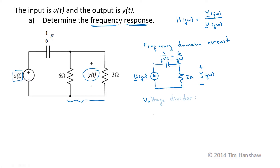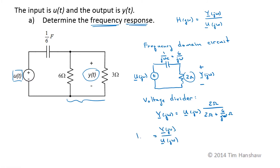This is now just a voltage divider. The output voltage Y of J omega is equal to the total voltage across the series combination, U of J omega, times the 2-ohm impedance over the sum of the two series impedances: 2 ohms plus 6 over J omega ohms. So Y over U is the frequency response H of J omega. To simplify, I'll multiply the top and bottom by J omega, so this becomes J2 omega in the numerator over 2J omega plus 6. There's our frequency response.